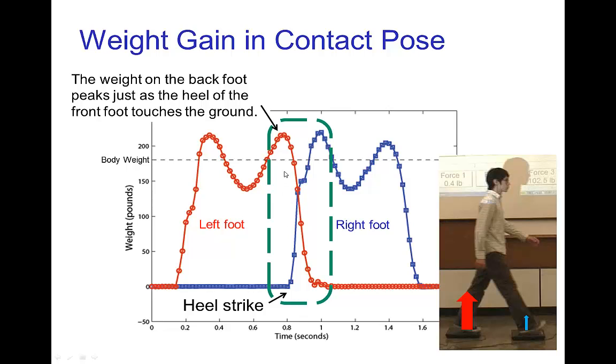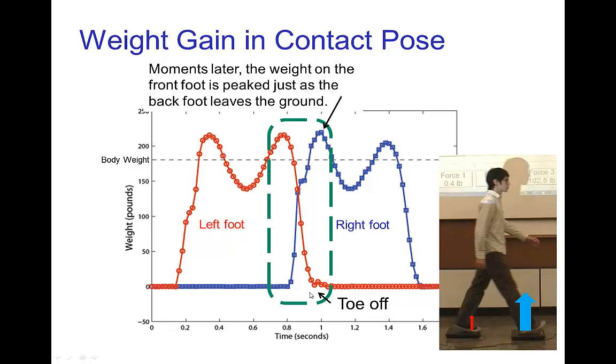At that point the left foot, which is the rear foot, has a spike of weight. There's a very significant amount of weight gain at the start of the contact pose and that continues to the end of the contact pose. In the end where the back foot is just leaving the back plate, the front foot has a very significant weight spike.